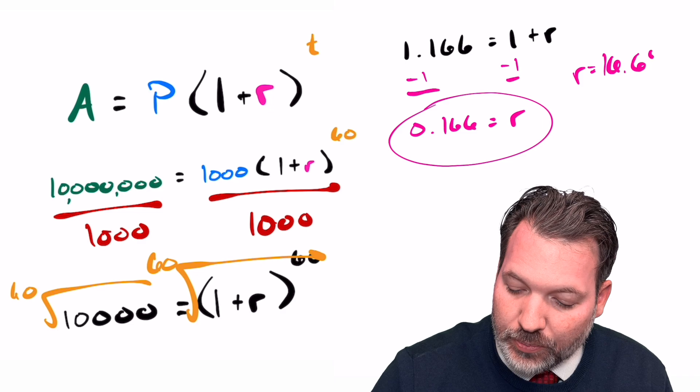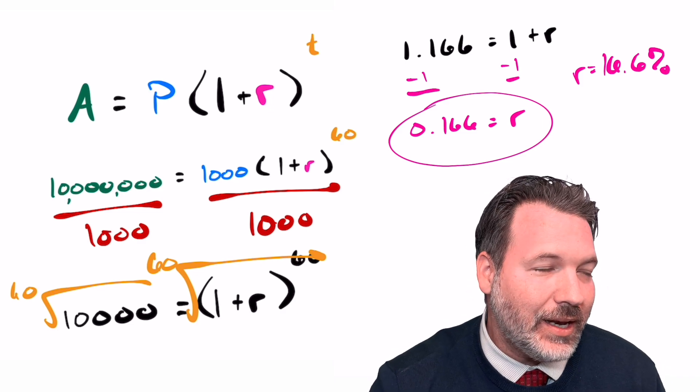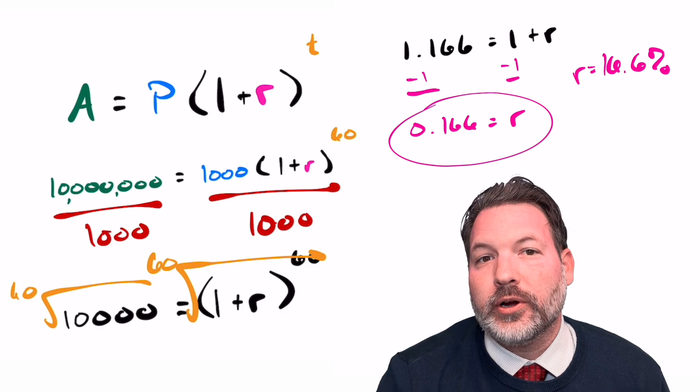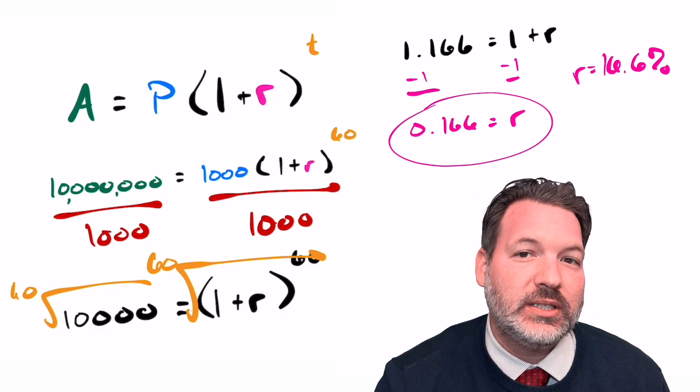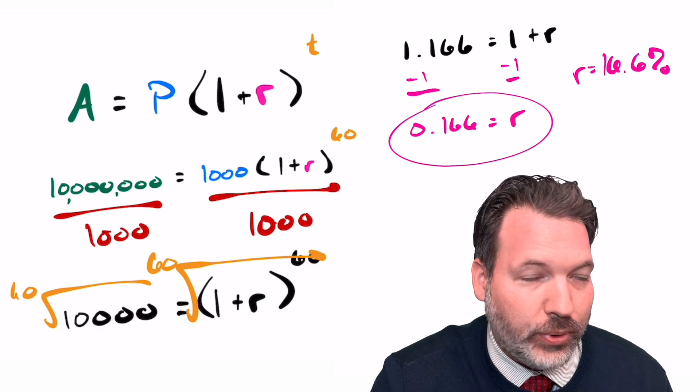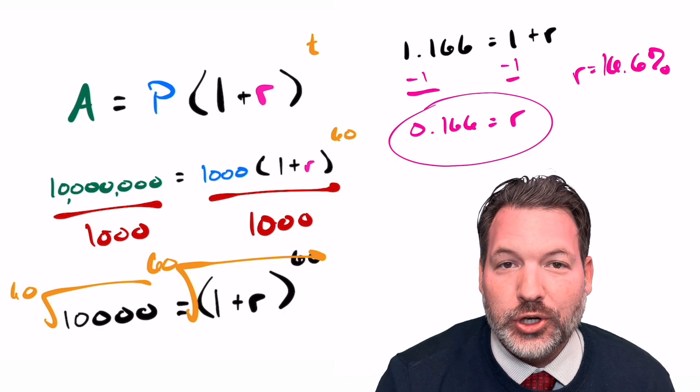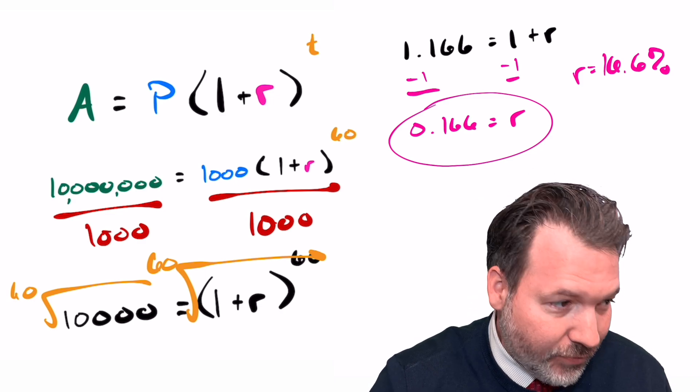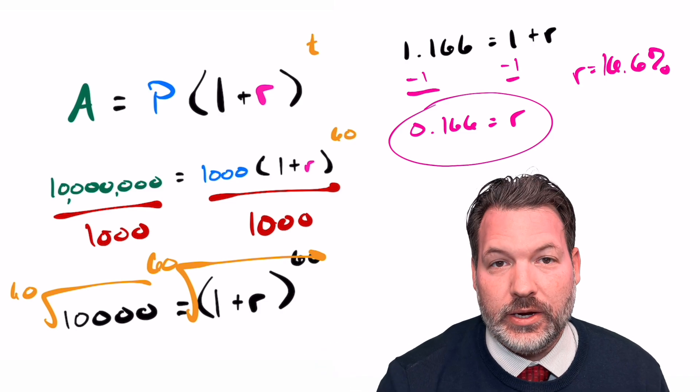Or if we express it as a percentage, 16.6%, which again, isn't necessarily eye-popping. But when you keep in mind the fact that the stock market on average grows somewhere between 7% and 10%, depending on what kind of time frame you're looking at, it is pretty amazing that Warren Buffett and Charlie Munger could consistently basically double the rate of growth of the stock market every year on average for 60 years.